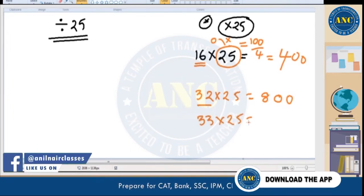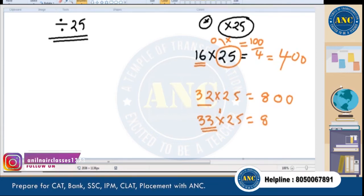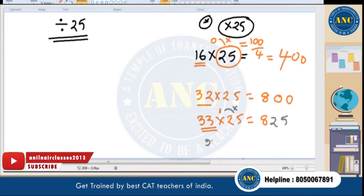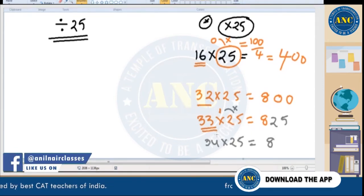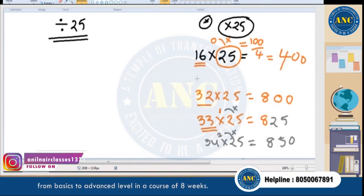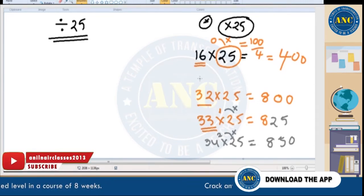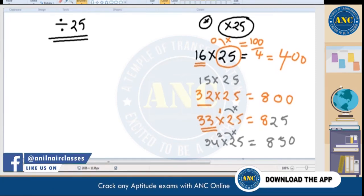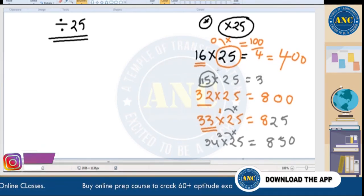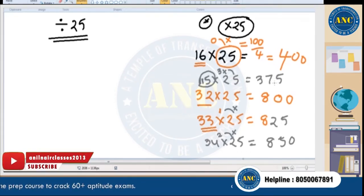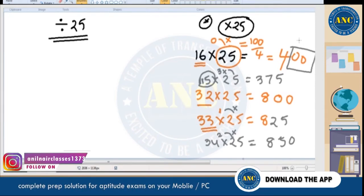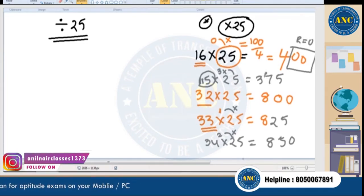For 33 × 25: divide 33 by 4 = 8 times, remainder 1; 1 × 25 = 25 → answer is 825. For 34 × 25: remainder 2; 2 × 25 = 50 → answer is 850. For 15 × 25: divide by 4 = 3 times, remainder 3; 3 × 25 = 75 → answer is 375. So the last two digits are always 00, 25, 50, or 75.